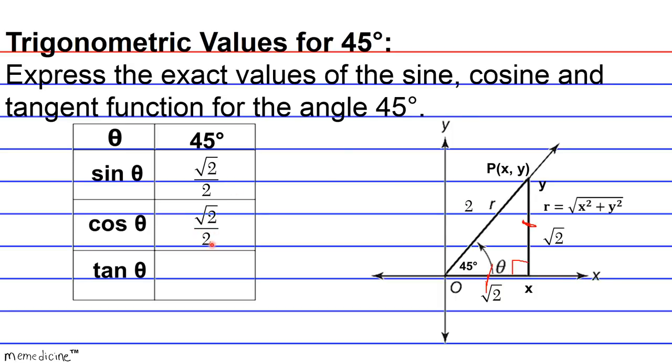Now we know that tangent is a derived quotient function by dividing the sine of theta by the cosine of theta. And in the case of 45 degrees, radical 2 divided by radical 2 or the y coordinate divided by the x coordinate is just going to be 1. So this is our answer. The exact values for the sine, cosine and tangent function of the angle 45 degrees.